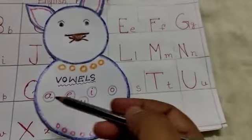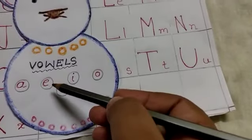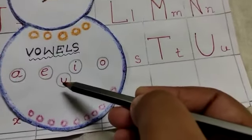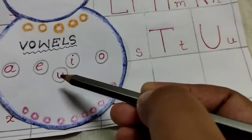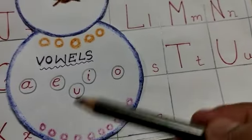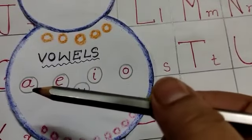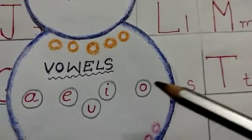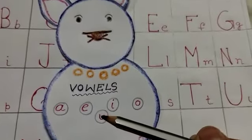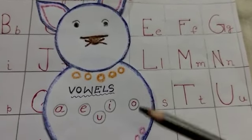The letters A, E, I, O, U are called vowels. Students, repeat with me. A, E, I, O, U are called vowels.